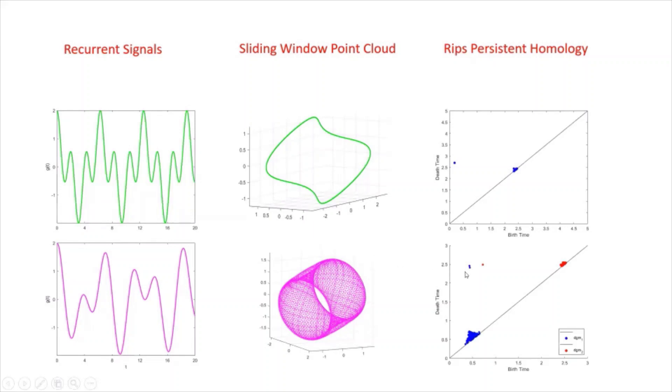And similarly, the persistence diagram on the bottom tells us that we get a topological torus because there are two one cycles and one two cycle.